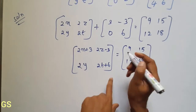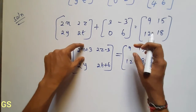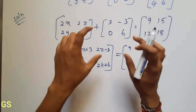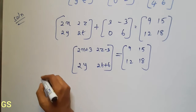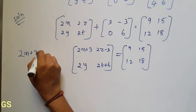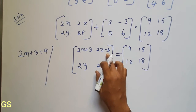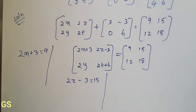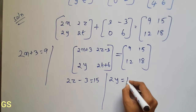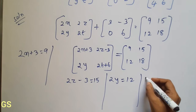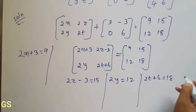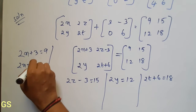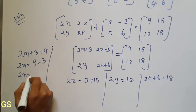Let's take a look at the two matrices. 1st term, 2nd term, 3rd term, 4th term — they are equal. 1st term is equal: 2x plus 3 is equal to 9. 2z minus 3 is equal to 15. 3rd term: 2y is equal to 12. 4th term: 2t plus 6 is equal to 18.